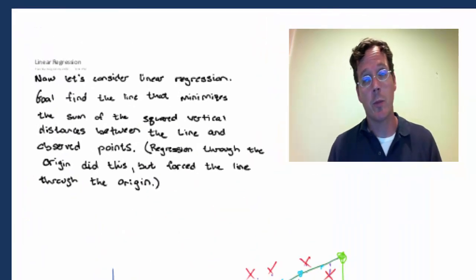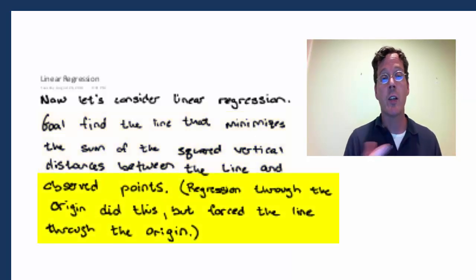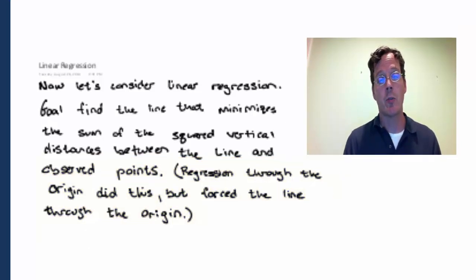Now let's consider linear regression. The goal of linear regression is to find the points that minimize the sum of the squared vertical distances between the observed data points and the fitted line. This is exactly like we were doing for regression through the origin. The only difference is now we're allowing the intercept to be non-zero.